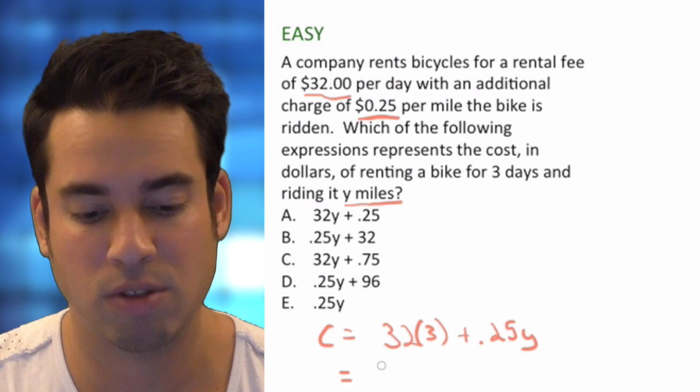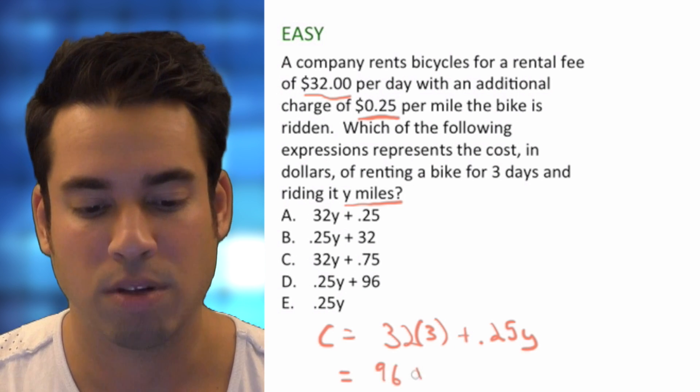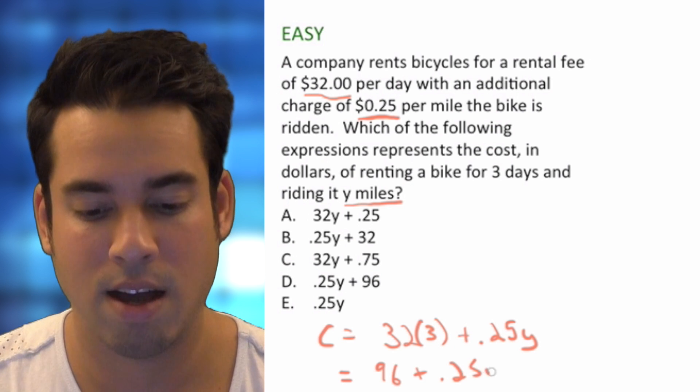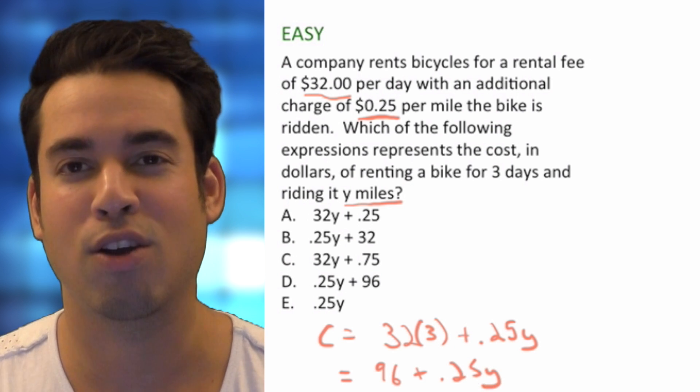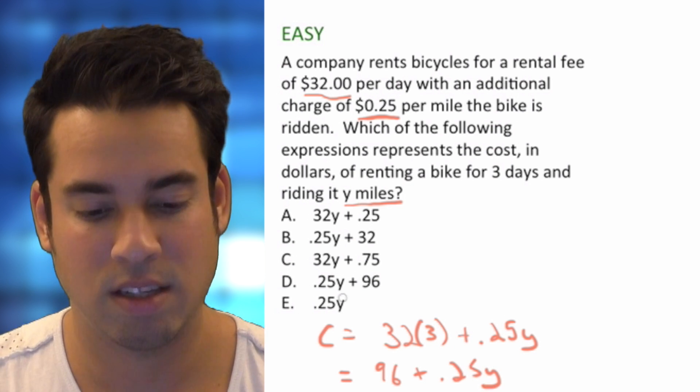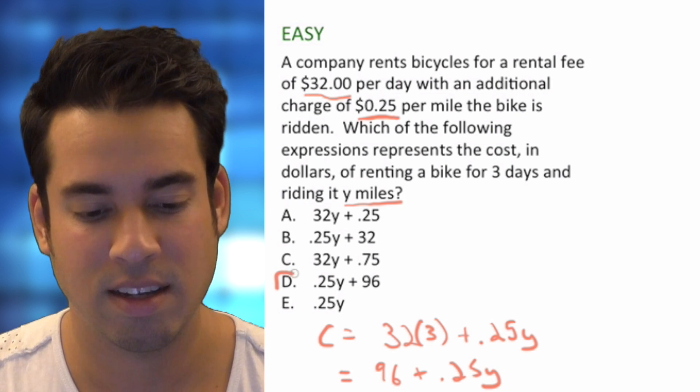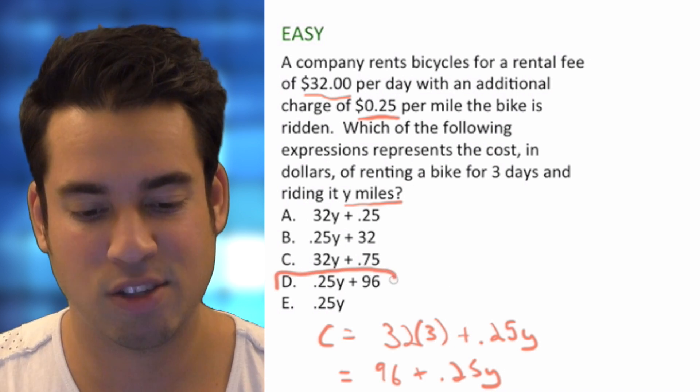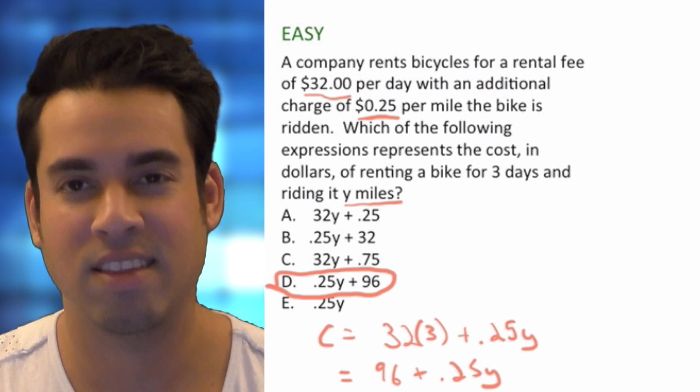And if we were to simplify this, three times 32 is 96 plus 0.25Y. And there is our equation. And we can see that even though the order is reversed, it is D final answer and done.